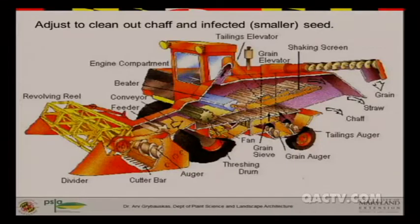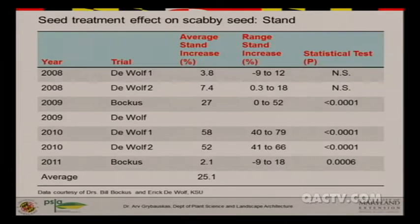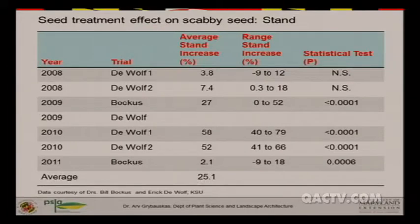The last thing with respect to managing scab: if you do get scab, it is very important to adjust your combine — or have the custom combiner adjust — to maximize cleaning out the light, infected seed. Infected seed is a lot lighter, and that's where the high toxin content is. If we can blow that out and clean it out, we're going to do a big job of reducing the amount of toxin measured in the bin or truckload. In terms of using that seed as a seed source for the following season, it's really not an issue. Standard seed treatments like Dividend and Raxil, across a bunch of trials from Kansas, showed an average of 25% improvement in stand, so we can utilize that seed as a seed source without changing the risk picture for the following season.